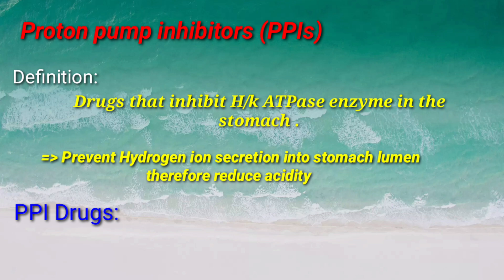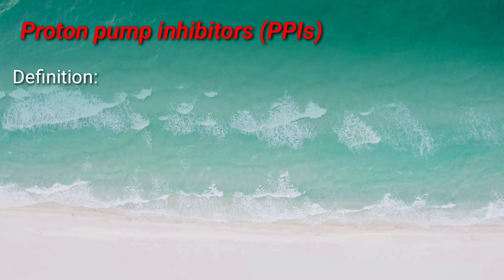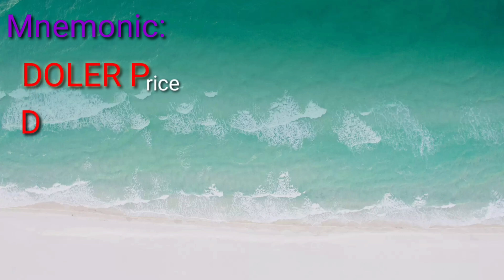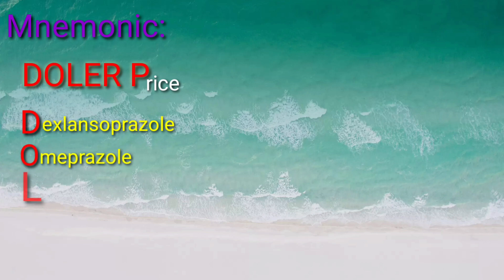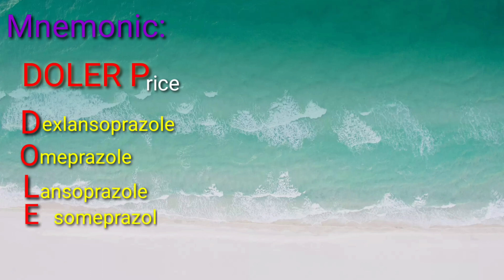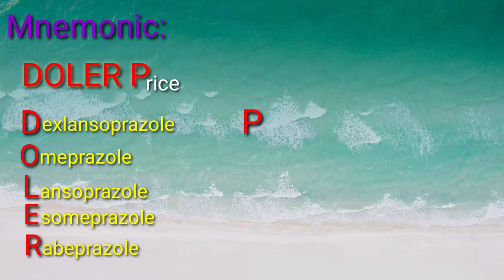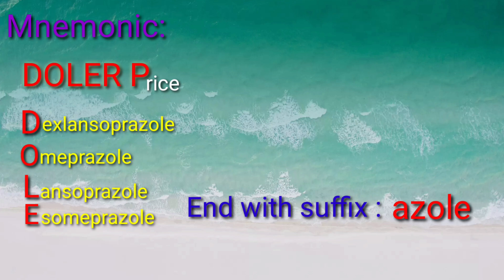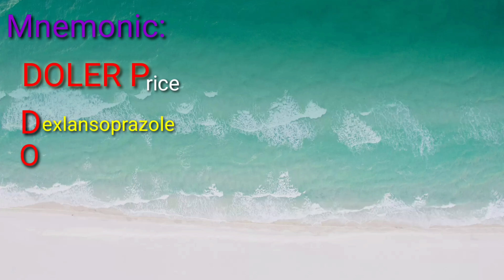Now, what are the drugs included in the proton pump inhibitors? You can memorize them easily using the mnemonic 'DOLEP': D for Dexlansoprazole, O for Omeprazole, L for Lansoprazole, E for Esomeprazole, R for Rabeprazole, and P for Pantoprazole. These drug names often end with the suffix '-prazole' as well.